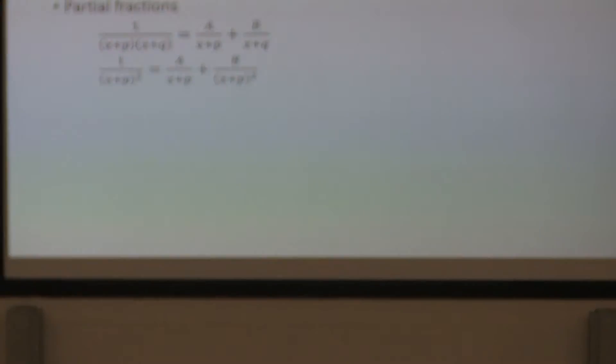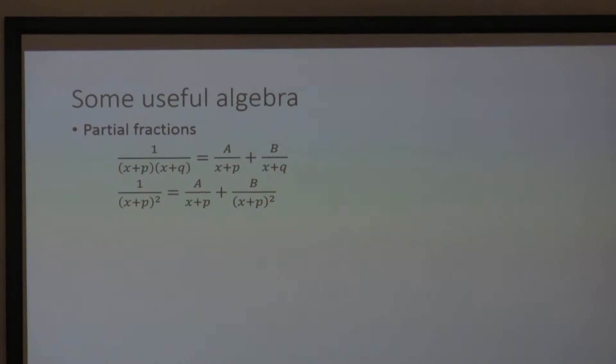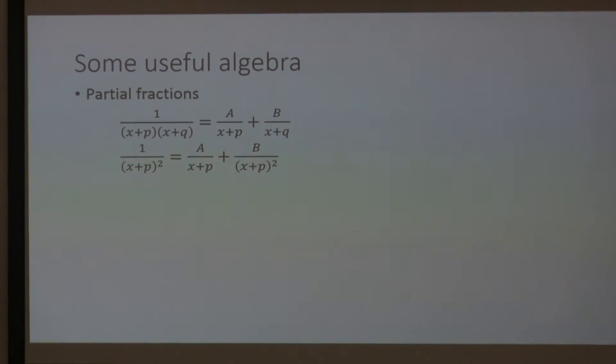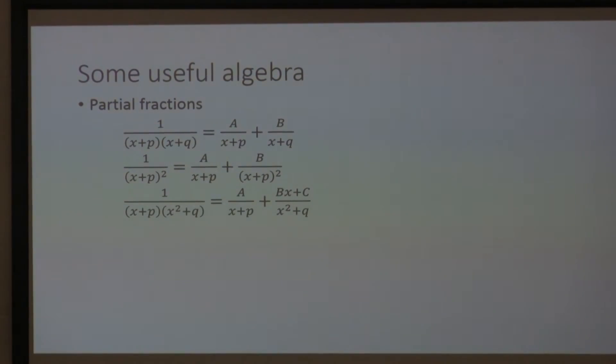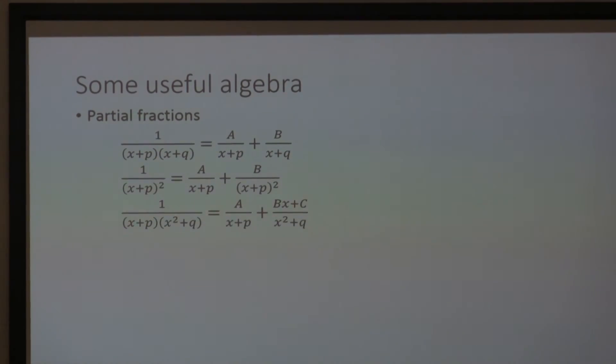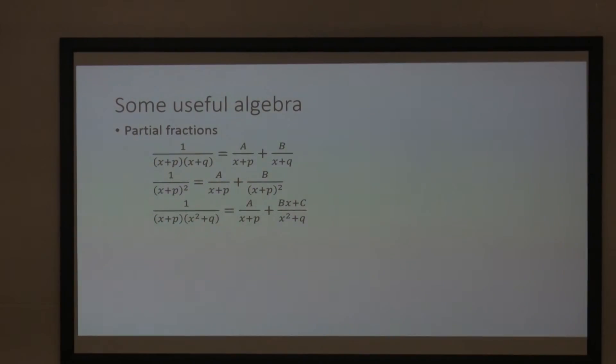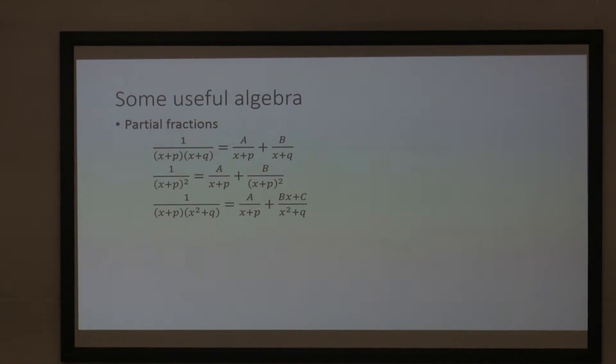If you've got a repeated root, remember to include each power up to and including that power of the original expression. And then, if you've got a quadratic expression in the denominator which doesn't factorize, then you need a bx plus c term on top. Okay. And, that's how, that's basically partial fractions, how they work.